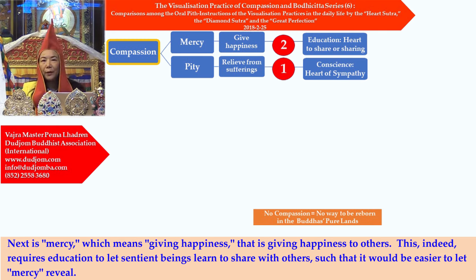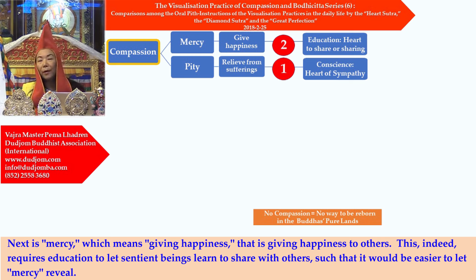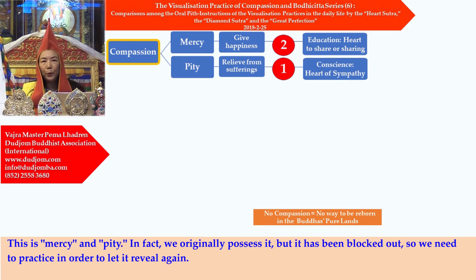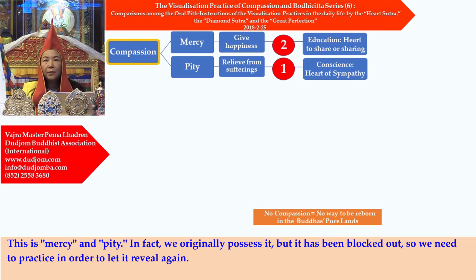Next is mercy, which means giving happiness to others. This requires education — letting sentient beings learn to share with others — such that mercy would more easily be revealed. In fact, we originally possess both pity and mercy, but they have been blocked out, so we need to practice in order to let them reveal again.